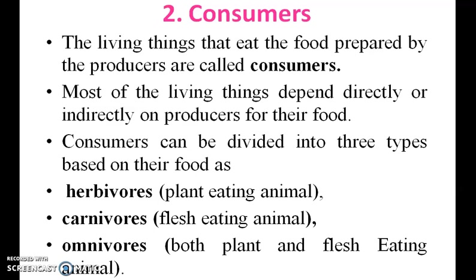Now we will see consumers. The living things that eat the food prepared by the producer are called consumers. Most living things depend directly or indirectly on producers for their food. Consumers can be divided into three types based on their food: herbivores, carnivores and omnivores. Herbivores are plant-eating animals, carnivores are flesh-eating animals, and omnivores eat both plants and flesh.